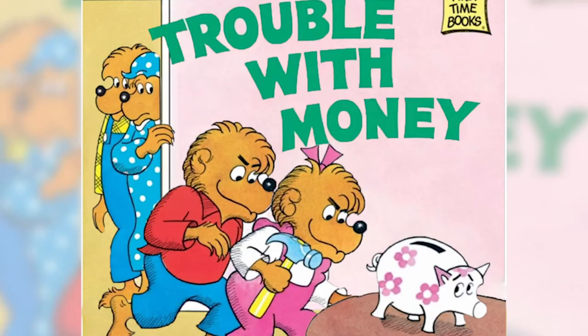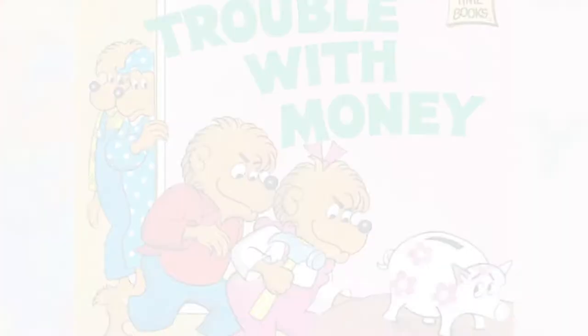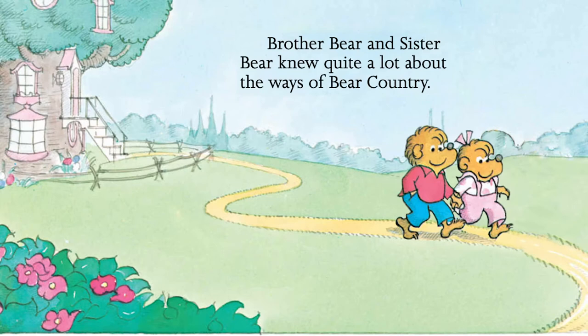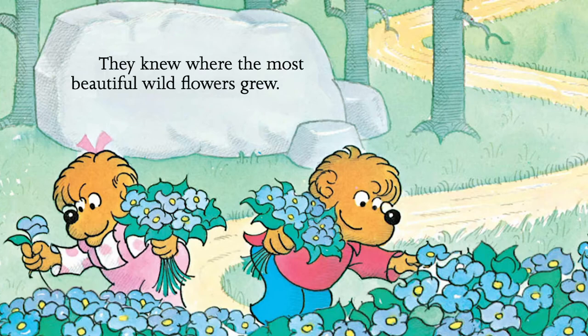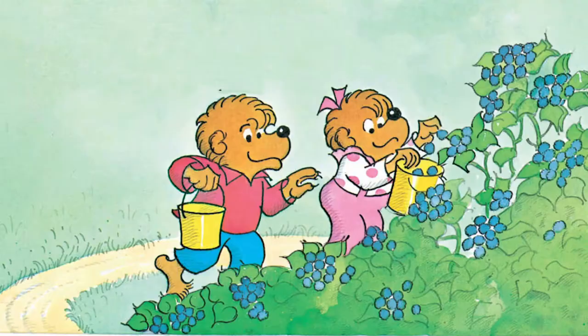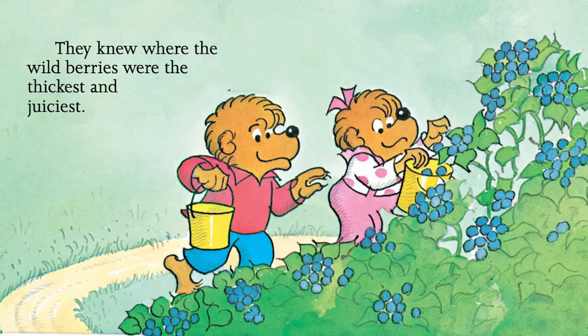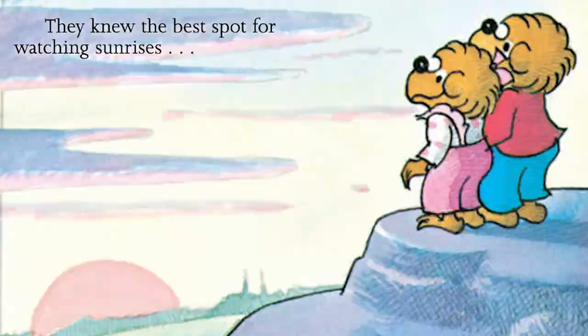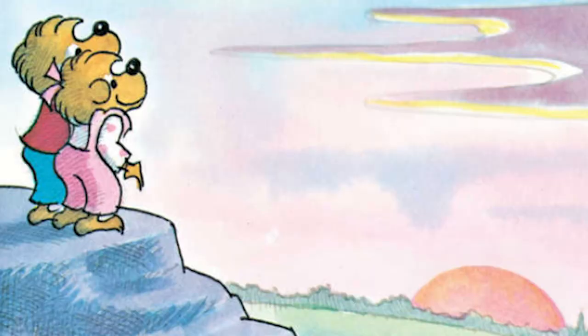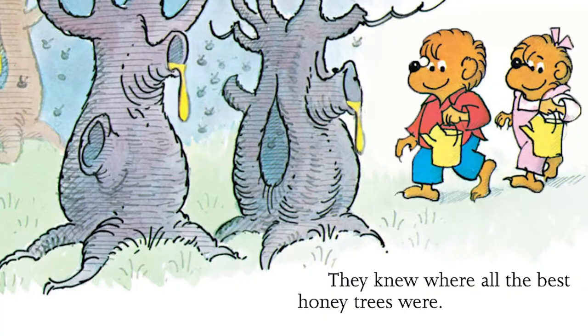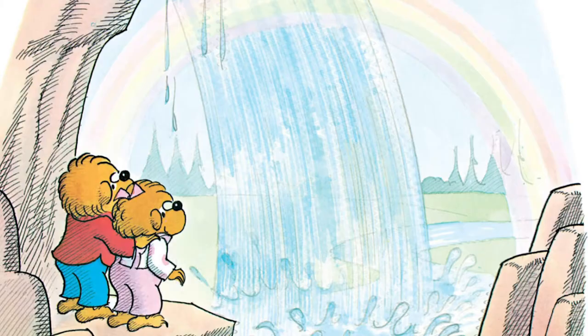Today, we're reading Berenstain Bears, The Trouble with Money. When little bears spend every nickel and every penny, the trouble with money is they never have any. Brother Bear and Sister Bear knew quite a lot about the ways of bear country. They knew where the most beautiful wildflowers grew, where the wild berries were the thickest and the juiciest, where the best spots were to watch the sunrise and the sunset, where all the best honey trees were. They even knew a very special place where you could almost see a rainbow from a secret space behind a waterfall.